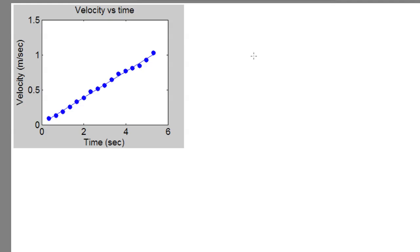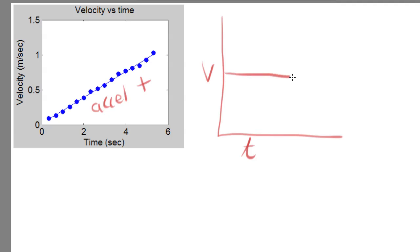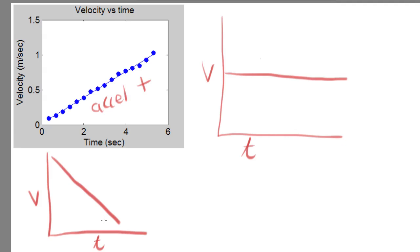Looking at acceleration on a velocity-time graph: if velocity increases as time increases, the graph shows a positive acceleration — a rising slope. If the velocity stays the same as time increases, the graph shows no acceleration — constant velocity, a flat horizontal line. If the velocity decreases as time increases — a decreasing slope — that is acceleration in the negative direction, also called deceleration.